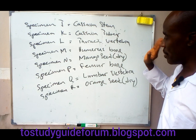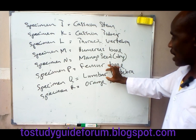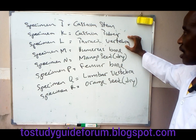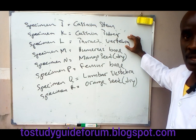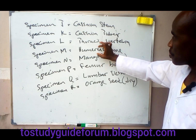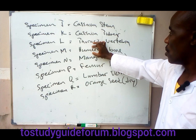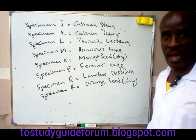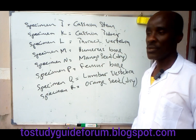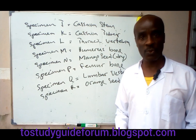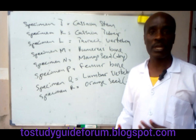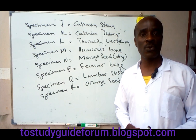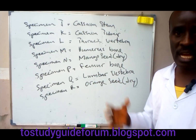The lumbar vertebra is part of the axial skeleton, and the same goes for the thoracic vertebra — both are part of the axial skeleton. While the humerus bone and femur bone are part of the appendicular skeleton. In our next video, we'll be analyzing each specimen, discussing possible exam questions, and comparing similarities.